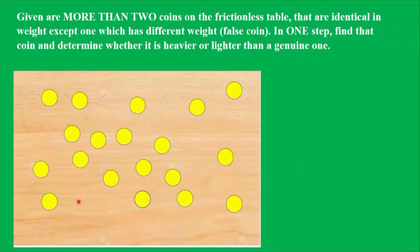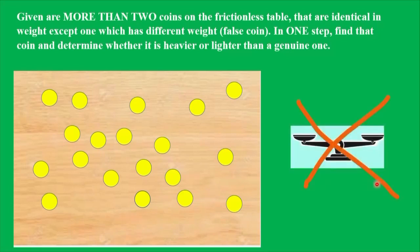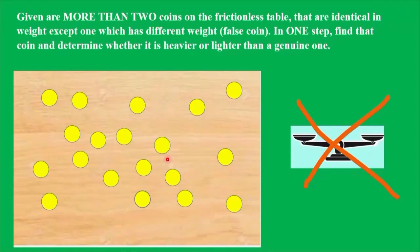We have more than two coins on a frictionless table. The coins are identical in weight except one, which has a different weight. In one step, find that coin and determine whether it is heavier or lighter than a genuine one. By doing this, you don't need to use a balance. Instead of a balance, we will use a feature of the physical phenomenon known as elastic collision.